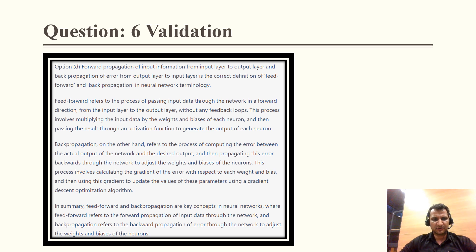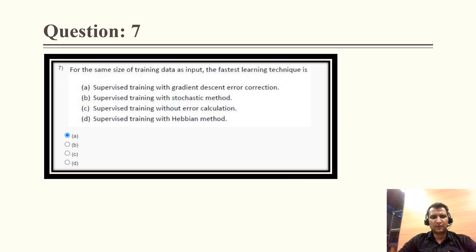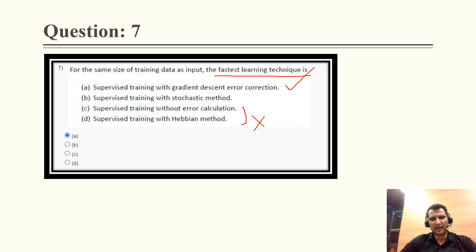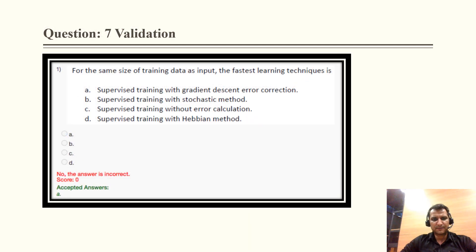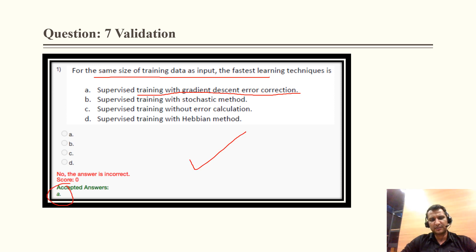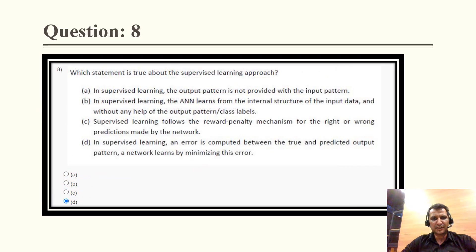Question 7: for the same size of training data, the fastest learning technique is supervised training with gradient descent — that is the correct answer. Supervised training with the stochastic method is another option, but both A and B are candidates. Based on the previous year question paper where the same question was asked, the accepted answer is option A: supervised training with gradient descent error correction.